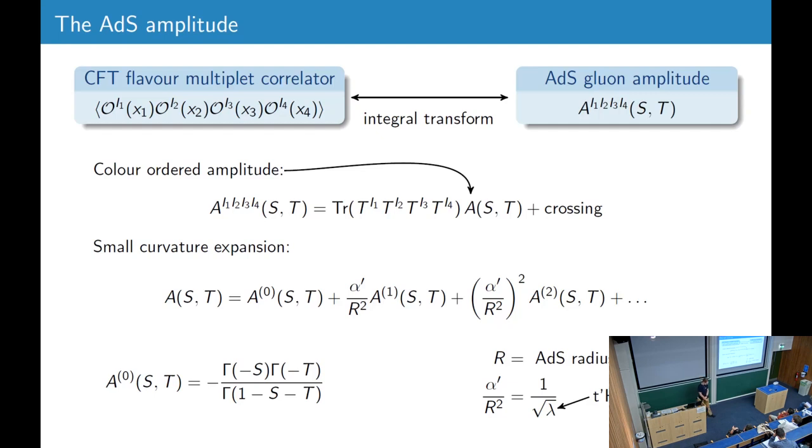What's now the AdS amplitude? In this case, it's defined in terms of this CFT correlator of an operator from the flavor multiplet, which has an index in the adjoint of the group G. And we do the same integral transform as for the Virasoro-Shapiro amplitude to get this AdS 4-gluon amplitude. And we can consider the color ordered amplitude, which is the prefactor of this, whatever multiplies this trace of four group generators. And we do, again, a small curvature expansion and the leading term is the usual flat space Veneziano amplitude.